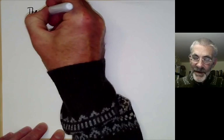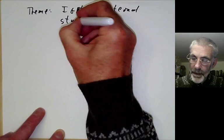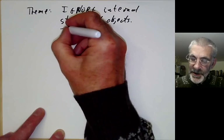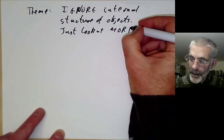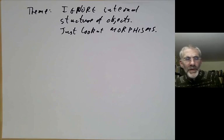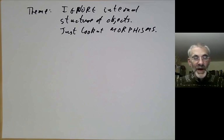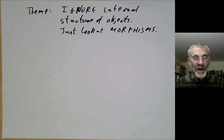The single fundamental theme of category theory is that we should ignore the internal structure of objects and just look at morphisms. In most areas of mathematics, if you're studying a group you spend time looking inside it at its elements and subgroups. In category theory the philosophy is: don't look inside the group — instead, study it by looking at the morphisms from this group to other groups, or from other groups to this group.